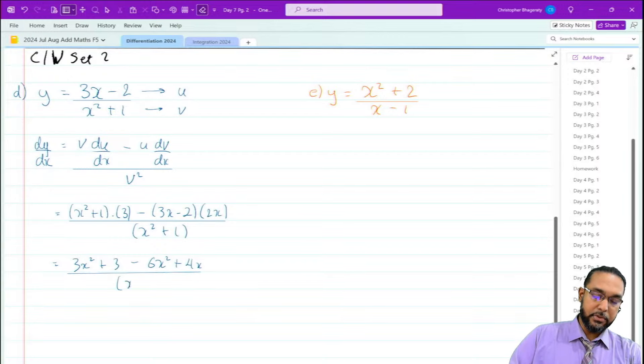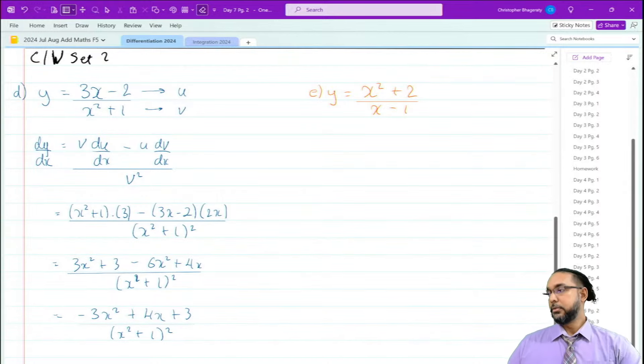That's all over x² + 1. So 3x² - 6x² gives us -3x². Then plus 4x and plus 3. Nothing else can simplify, so you have a quadratic in the numerator. And then x² + 1 - sorry, I forgot to put the square on the denominator.